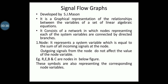One is node. It represents a system variable which is equal to the sum of all incoming signals at the node. Outgoing signals from the node do not affect the value of the node variable. We will take an example. In that example, R, E, B and C are nodes in the figure.